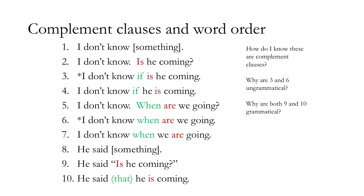Let's look at complement clauses and a common learner error. 'I don't know. Is he coming?' — here there's yes-or-no movement, with 'is' moved to first position. The mistake learners make is saying 'I don't know, is he coming?' embedded together. The problem is that 'if' and 'is' would both be trying to occupy the same complementizer spot — the C position. Since 'if' blocks that spot, 'is' cannot move up. So the correct form is: 'I don't know if he is coming.'